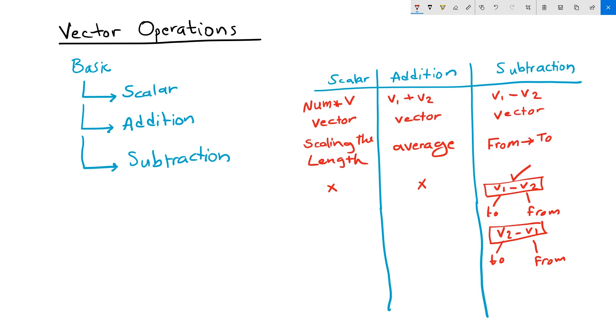In Grasshopper, you use the multiplication component to generate a scalar operation. You use the addition component to add vectors, and you use the subtraction component to do subtraction. There is the amplitude component in Grasshopper that sets a vector to a certain length, so it's not a scalar operation.